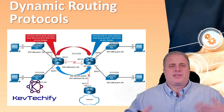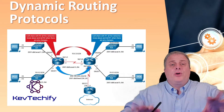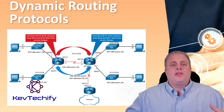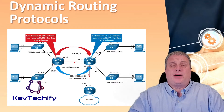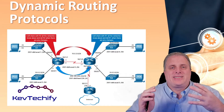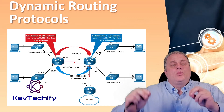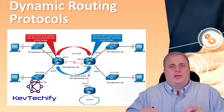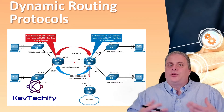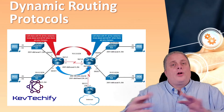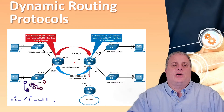Dynamic routing protocols perform several activities, including network discovery and maintaining routing tables. Important advantages of dynamic routing protocols are the ability to select the best path and the ability to automatically discover a new best path when there's a change in the topology. You, as the administrator, don't have to go in and enter static routes — you let the protocol take care of the calculations of what's the best path in real time. So if a connection goes down in the middle of the night, the routing protocol will automatically adjust for you. A dynamic routing protocol allows routers to automatically learn about networks from other routers.